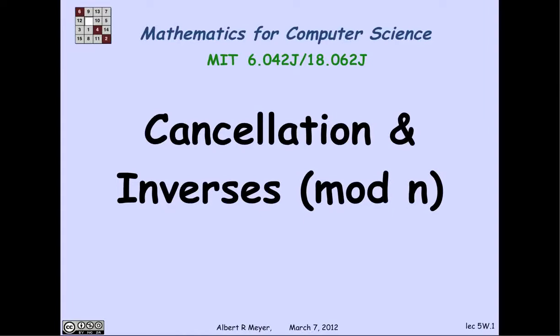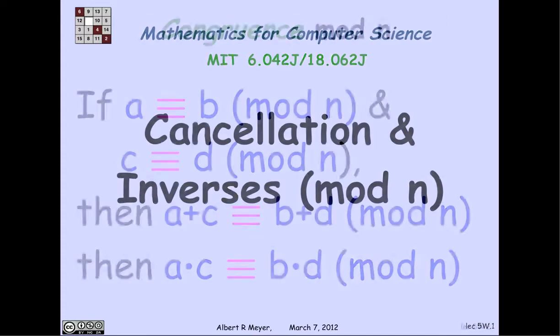So now we come to the place where arithmetic modulo n, or remainder arithmetic, starts to be a little bit different. And that involves taking inverses and canceling. Let's look at that.